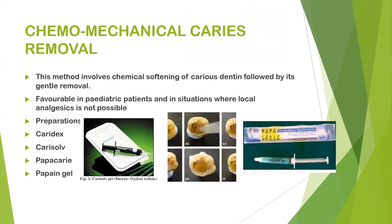Chemo-mechanical caries removal involves chemical softening of carious dentin followed by its gentle removal with spoon excavators. It is very favorable in pediatric patients and in situations where local anesthesia is not possible. Commercially available preparations include Carisolv, Papacárie, and others.